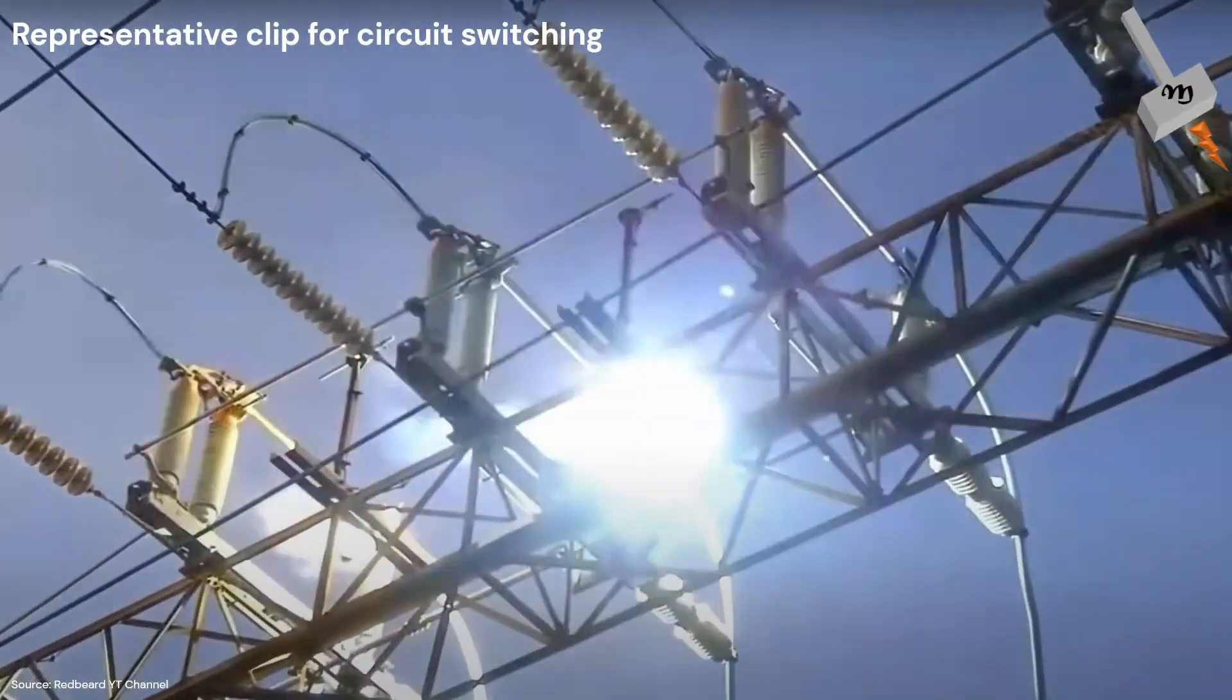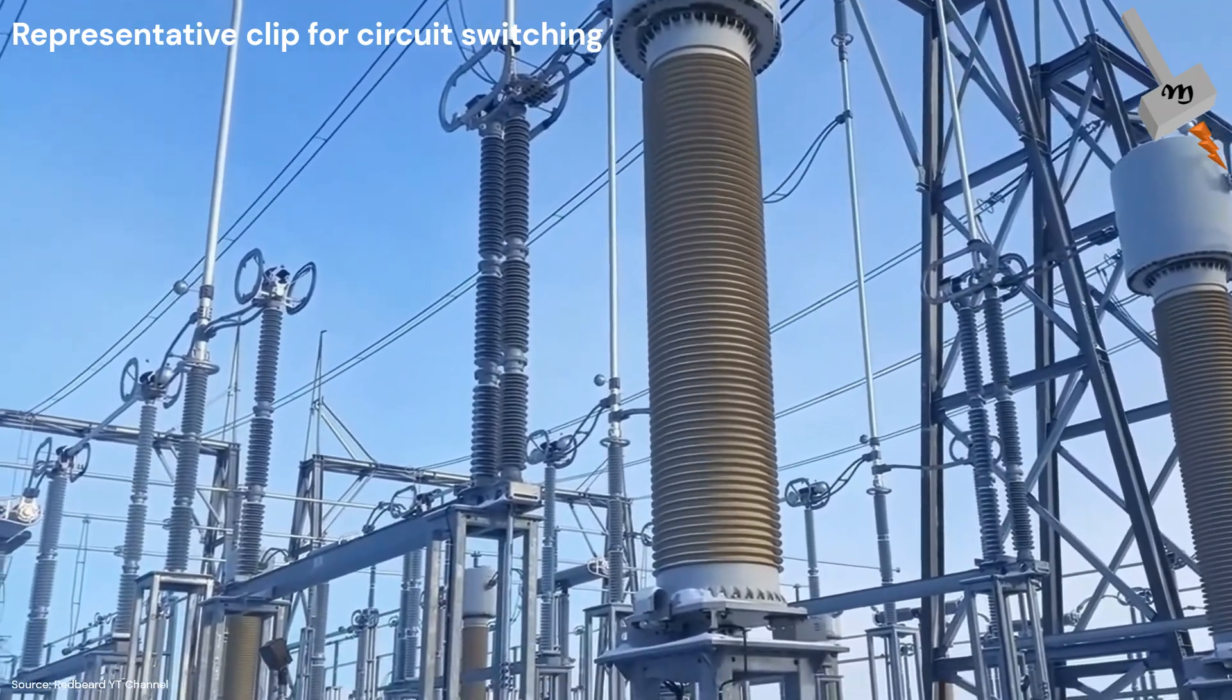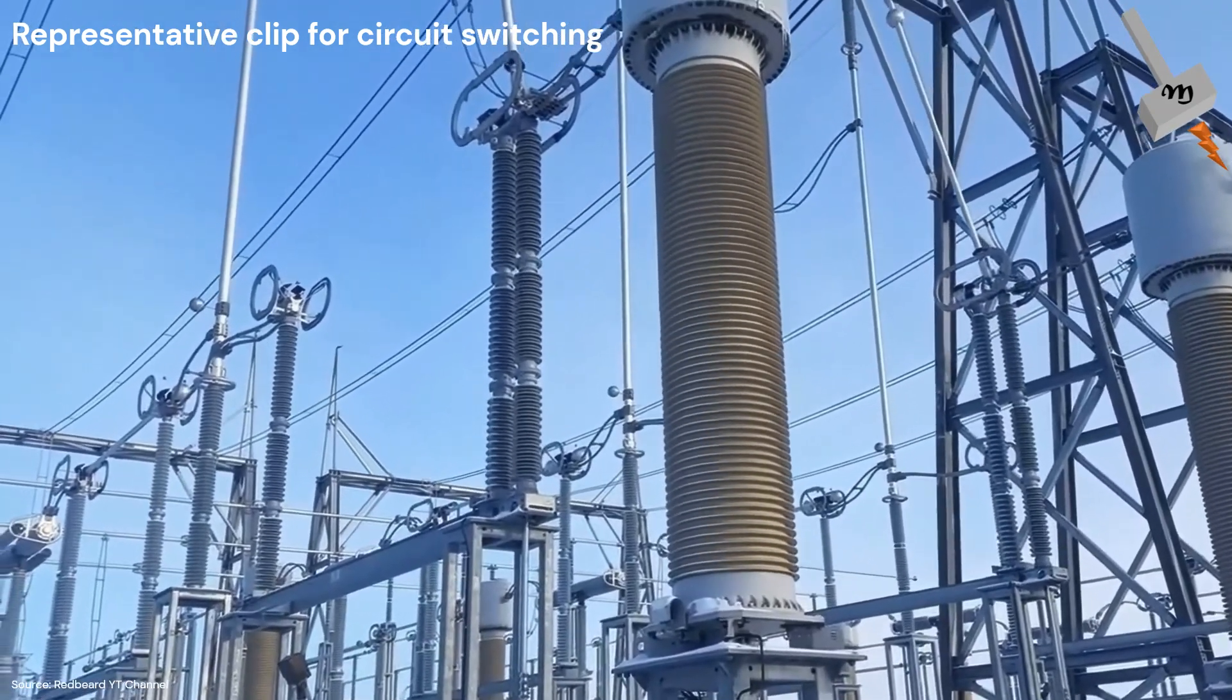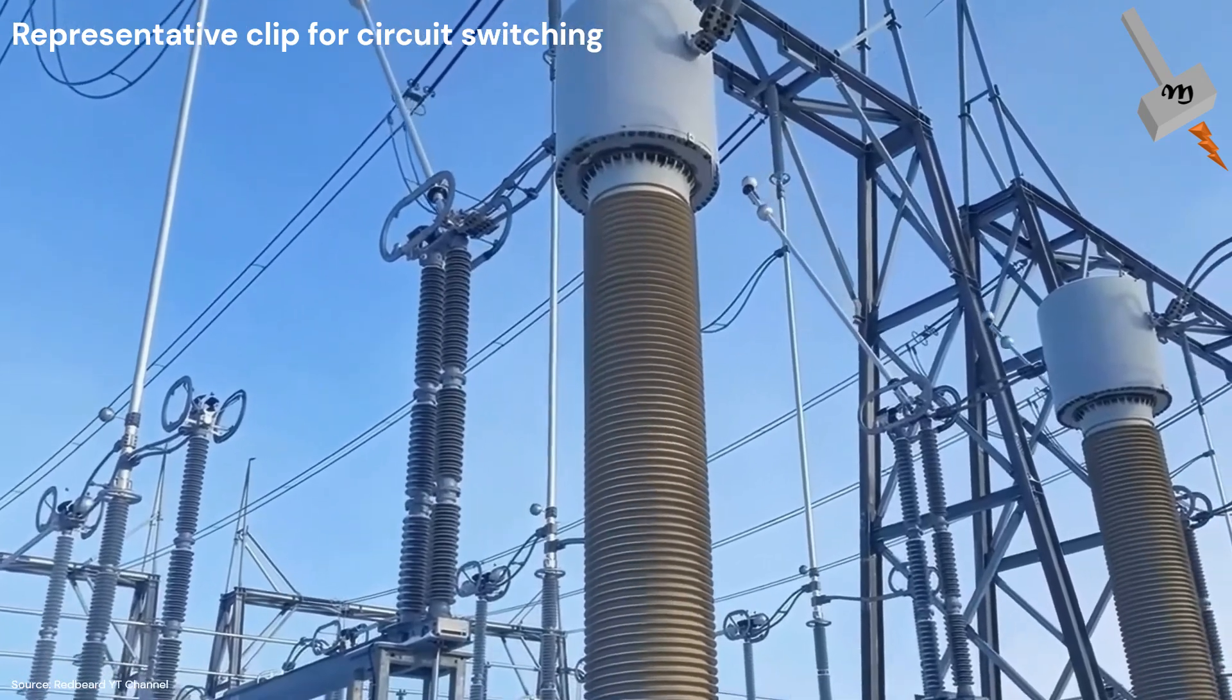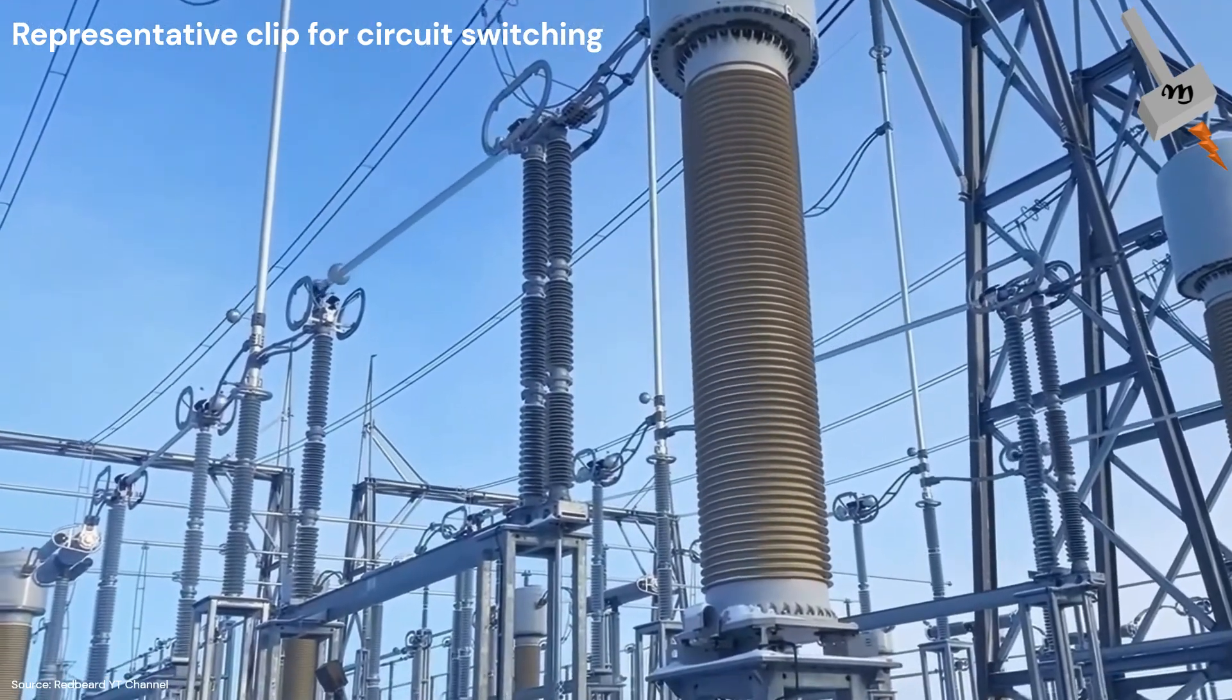Transient voltage, often elusive yet disruptive, is a phenomenon that affects transformers during critical operations such as the switching of circuits.